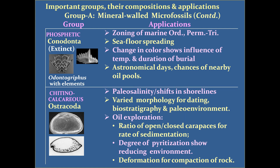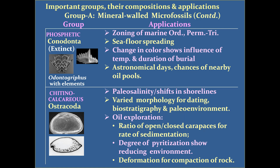The crustacean group ostracoda is particularly helpful in the study of paleosalinity or shifts in shorelines, so onlap and offlap, or transgression and regression deposits along the coast, can be studied using ostracoda. Their varied morphology is useful for dating, biostratigraphy, and paleoenvironment reconstruction. They are also useful in oil exploration; we need not even identify their species — parameters like rate of sedimentation, degree of pyritization, reducing environment, and deformation from compaction do not require species identification but are very useful in oil exploration.